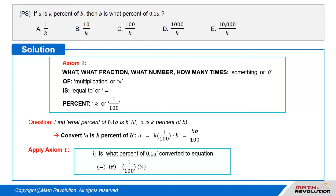So, we are given that A is k% of B, which converts into the equation A = k × (1/100) × B, that equals kB/100, by using Axiom 1.